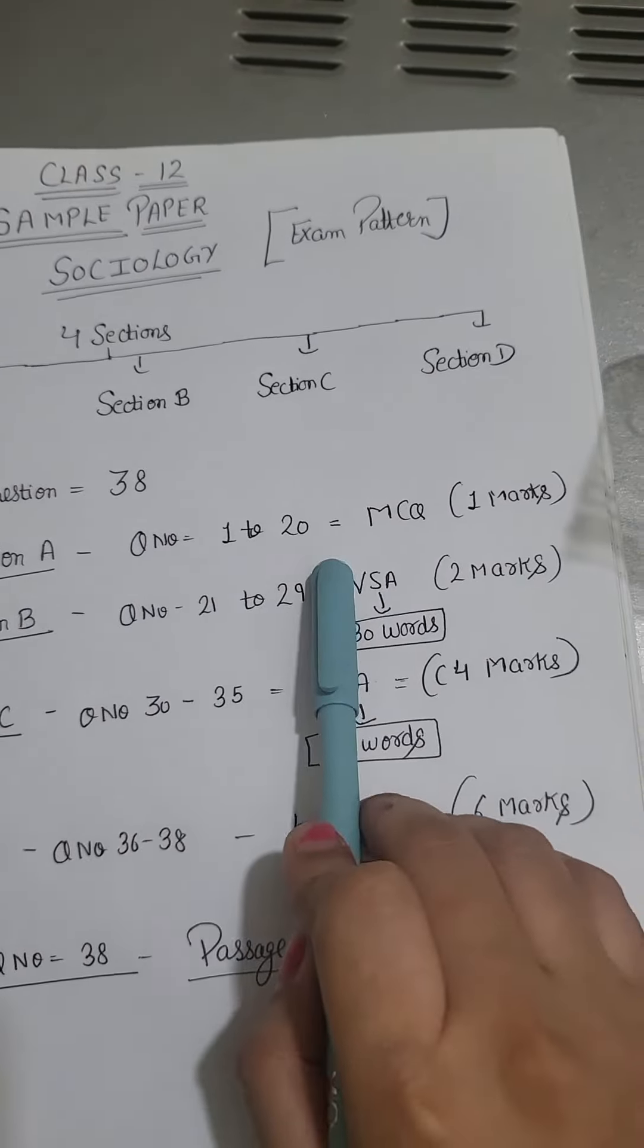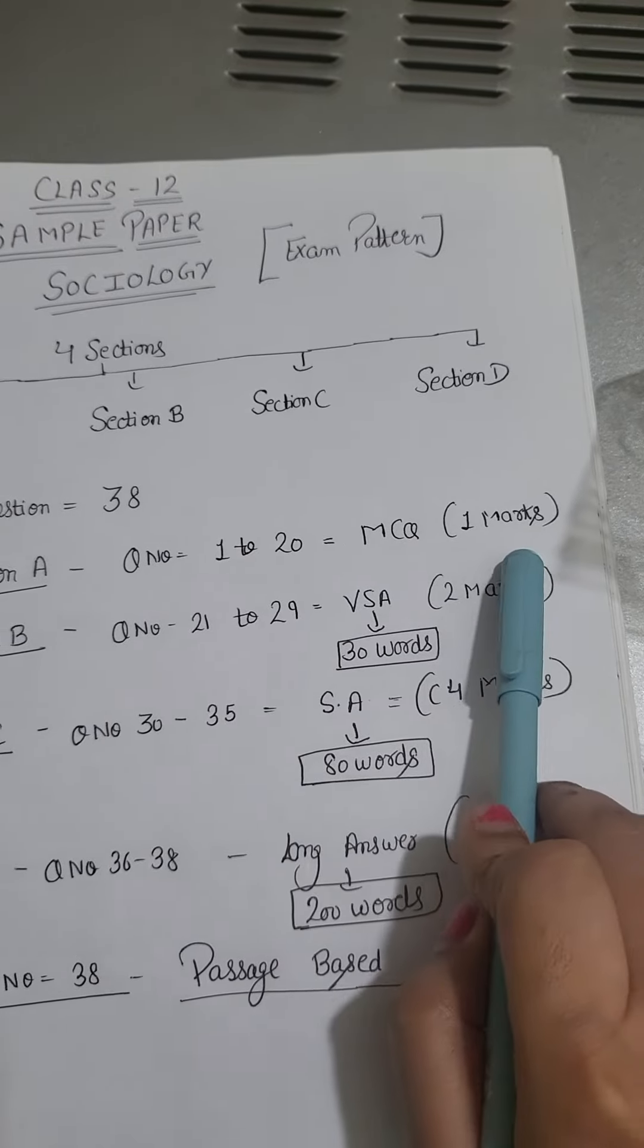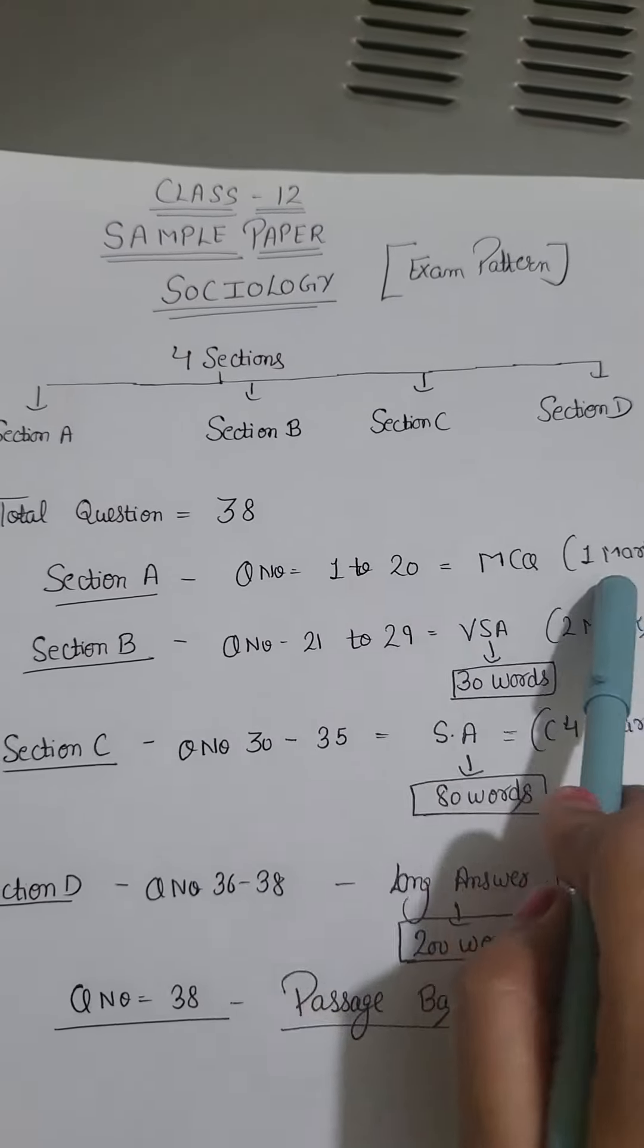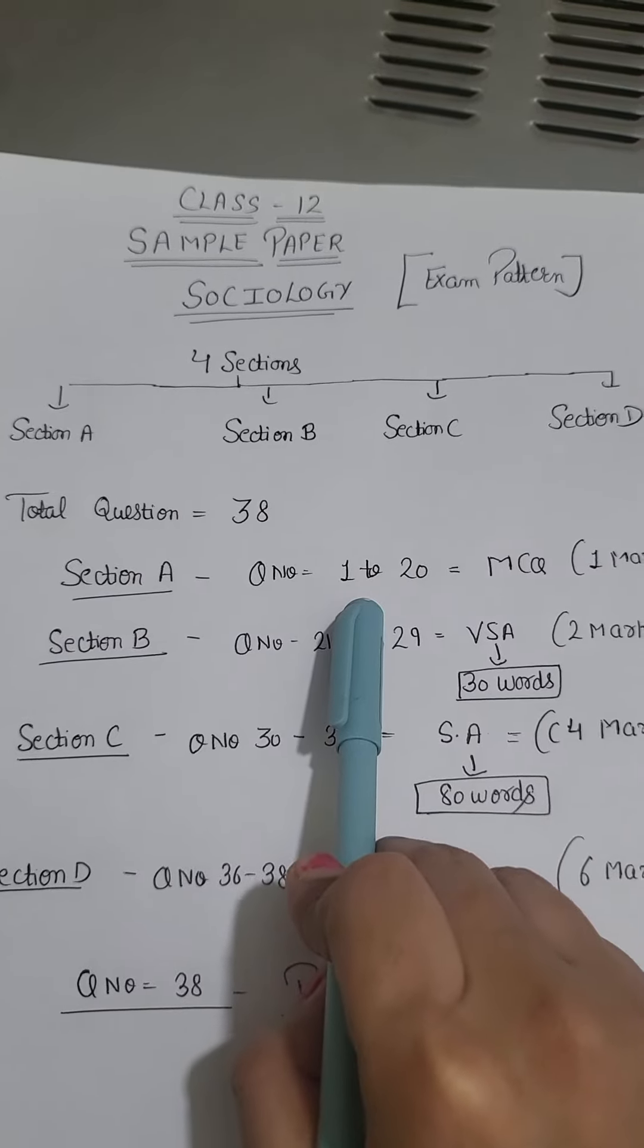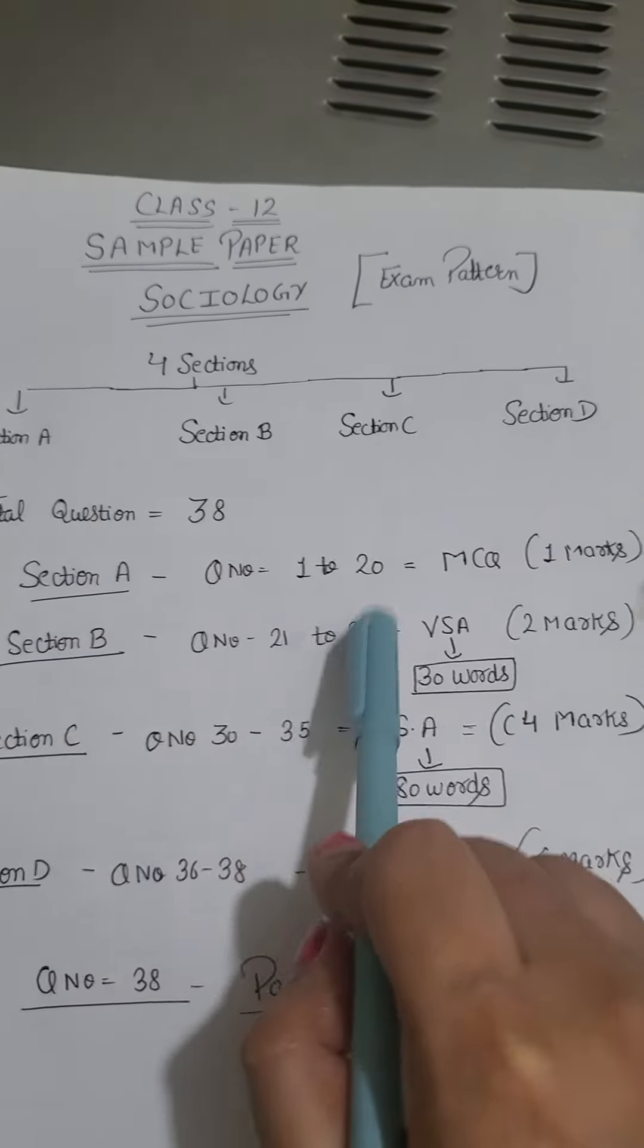Section A, questions 1 to 20. Section A is MCQ. One MCQ is of 1 mark, so this will be MCQ. You will see MCQ's weightage is significant. So you will have to prepare for 20 marks.